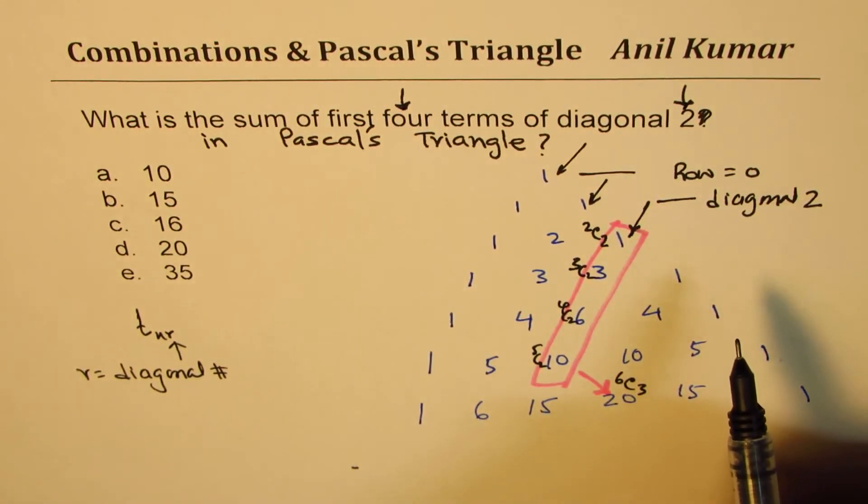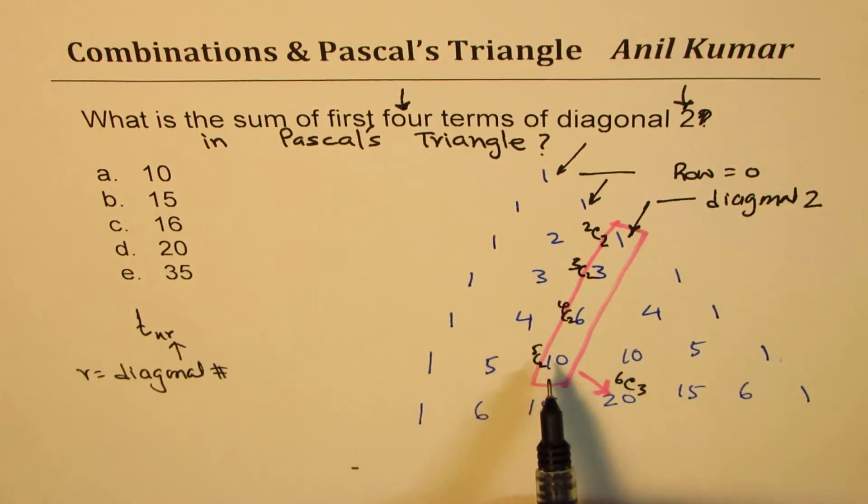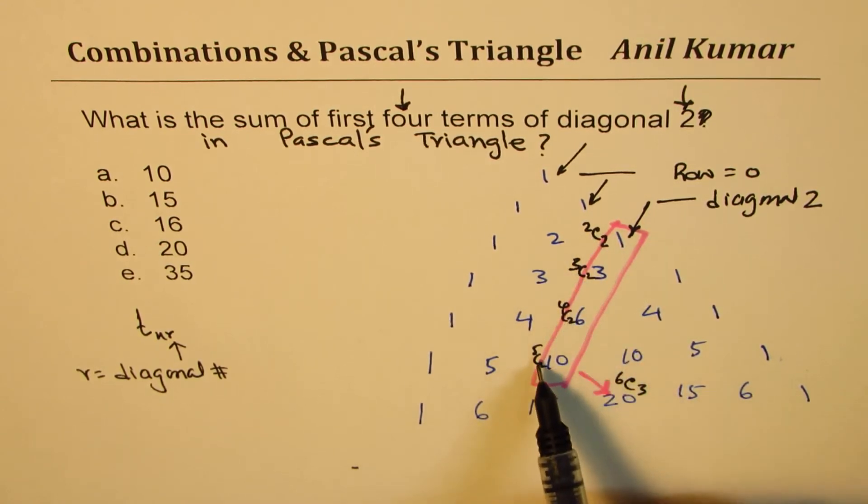2C2 starting with the second number: 2, 3, 4, 5. These are the four terms, and the answer is 6C3, right? So you could have done like this: 2C2 plus 3C2 plus 4C2 plus 5C2 - these are your four terms, and the answer is 6C3.